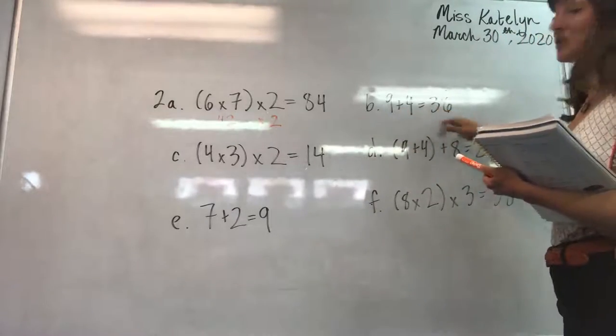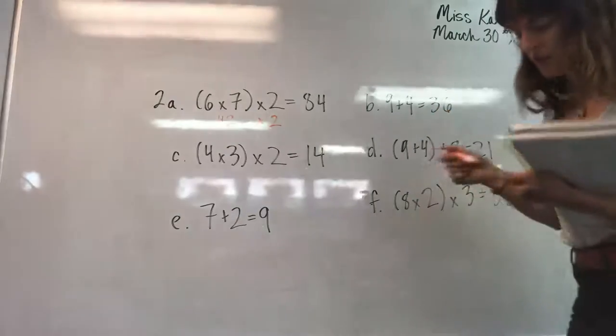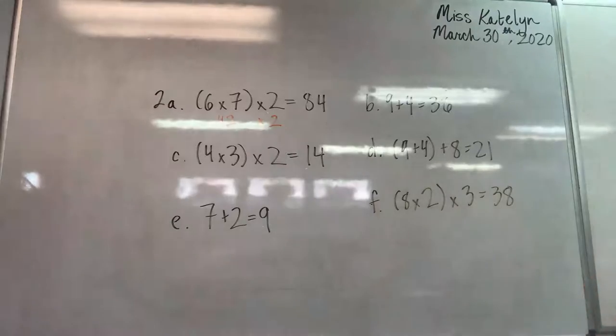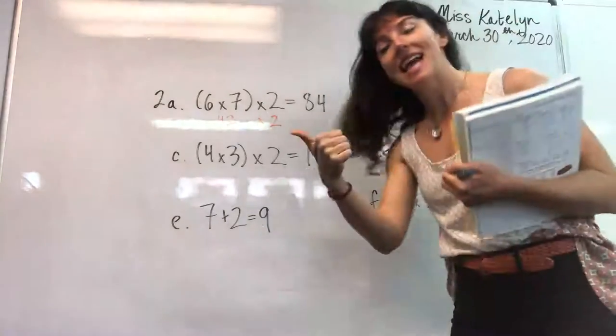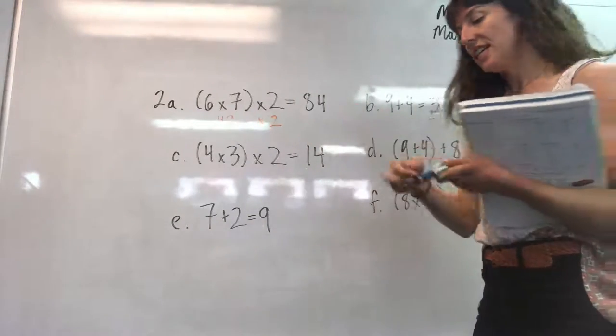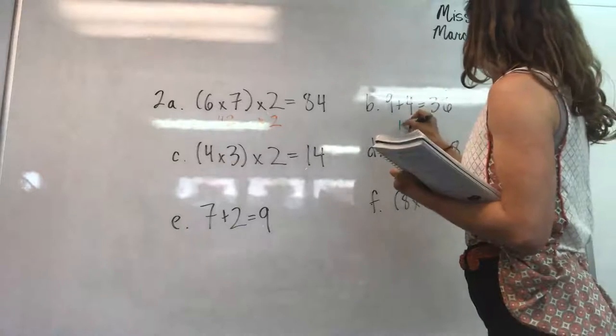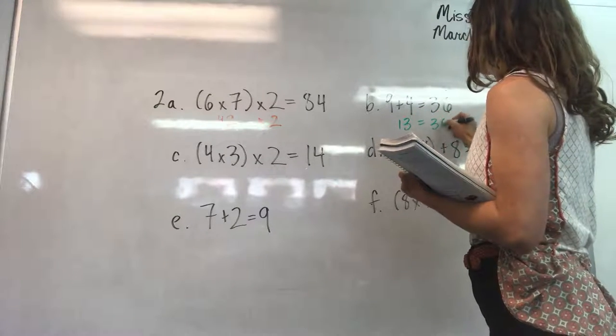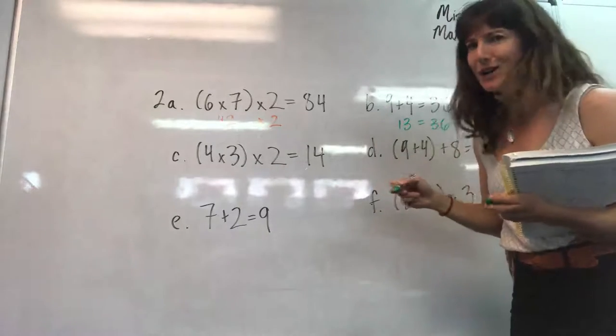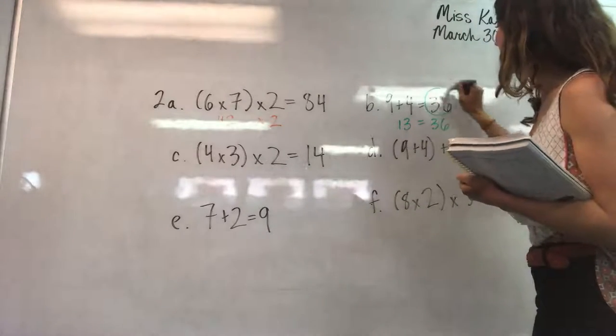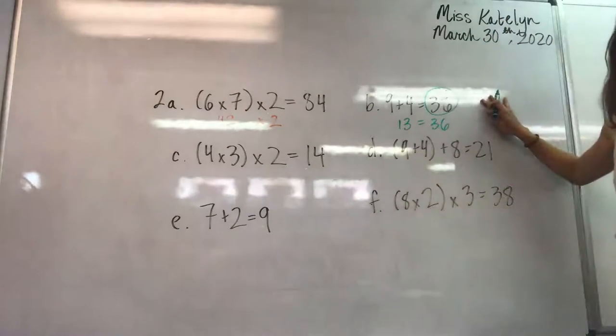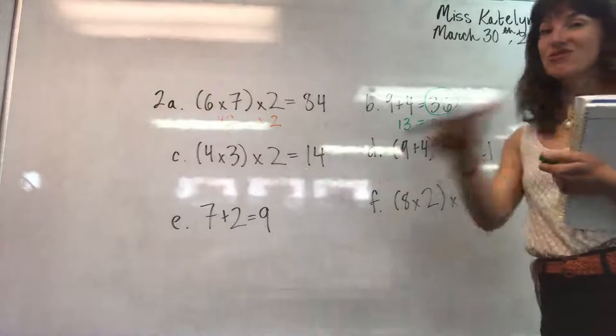Here we go across. Nine plus four equals 36. Let's do some math. What's nine plus four? Nine plus four, 10, 11, 12, and 13. 13 equals 36. Uh, I don't think so. Definitely circle that answer.